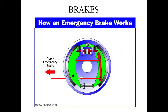The emergency brake lever is attached directly near the driver's seat. When you pull that hand brake lever, the cable directly causes the brake pad to get in contact with the drum, and the emergency brake is applied.